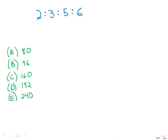So first of all, if we have ratios of two to three to five to six, that means that the total of those is 16. In other words, we have two parts, three parts, five parts, six parts. The total is 16 parts.